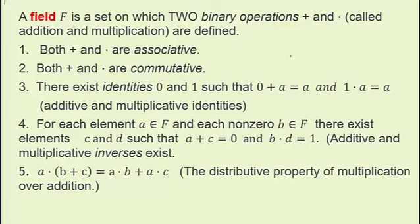Before we begin our study of vector spaces, there is one last thing in abstract algebra that we need, and that is the definition of a field. A field F is a set on which two binary operations are defined — we call them addition and multiplication. Both addition and multiplication are associative and commutative. There is an additive identity zero and a multiplicative identity one, and for each element A in F, there is an additive inverse and a multiplicative inverse as long as that element is not zero.